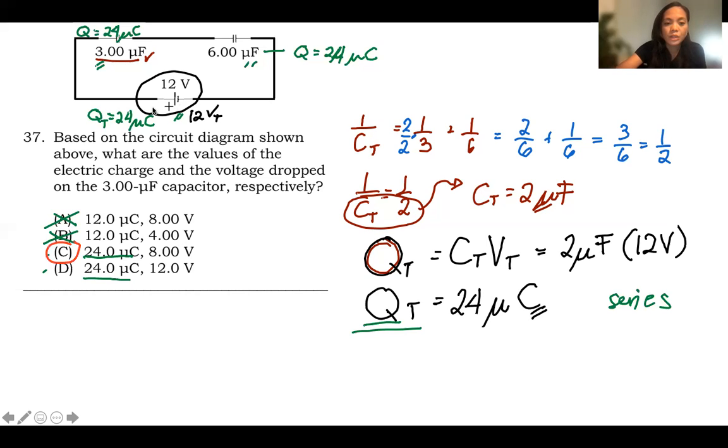Because when it comes to voltage, they are not equal. They add up. So the total voltage in a series circuit of capacitors is V1 plus V2. So definitely, if it has a total of 12, these have smaller values. So my answer there is already letter C. But let's compute.